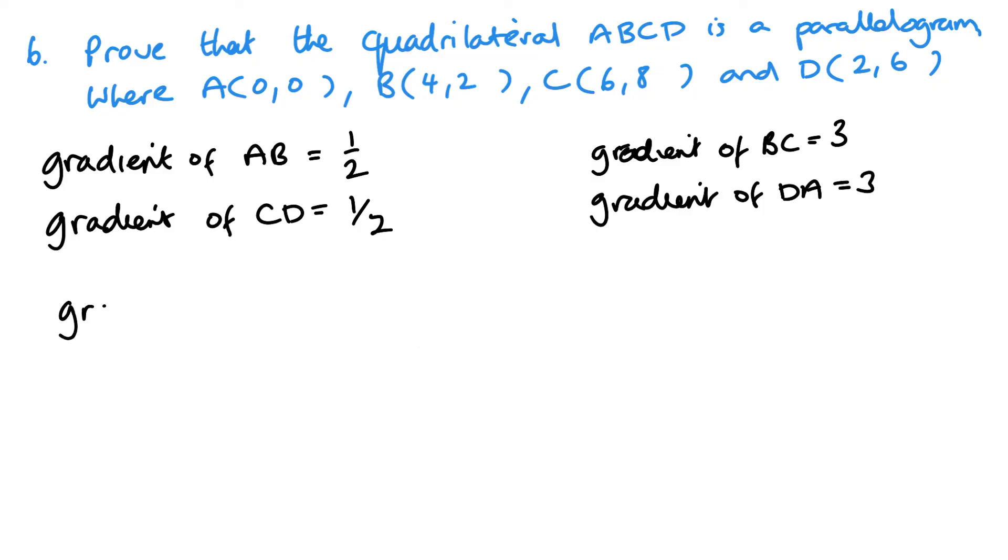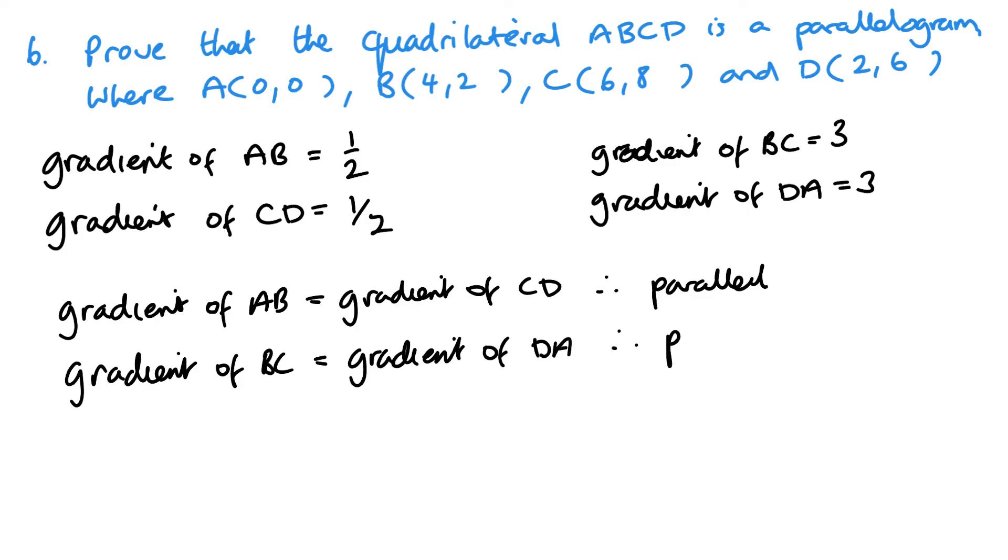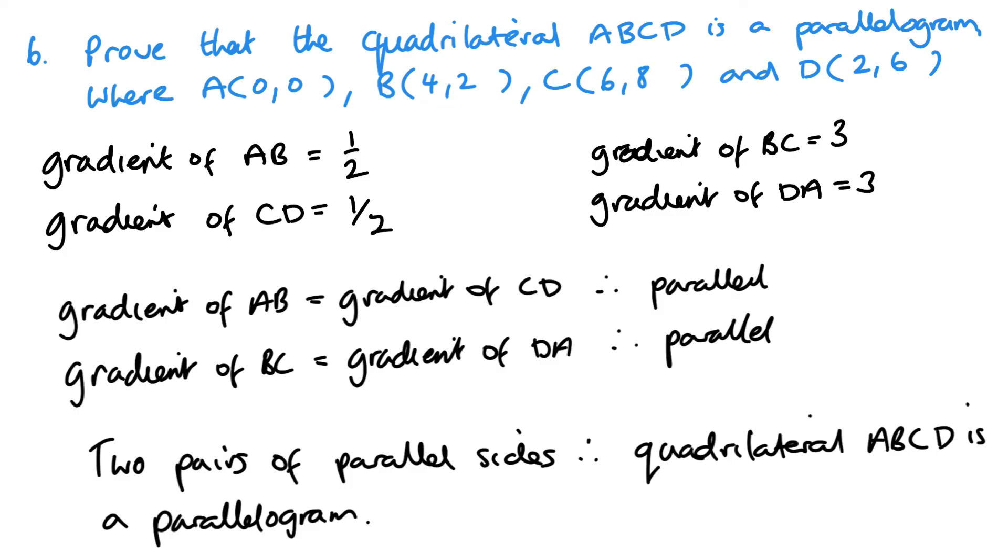So now we can say that gradient of AB equals gradient of CD, therefore parallel. And then gradient of BC equals gradient of DA, therefore parallel. And then we can finish with two pairs of parallel sides, therefore shape or quadrilateral ABCD is a parallelogram. And there we have it.